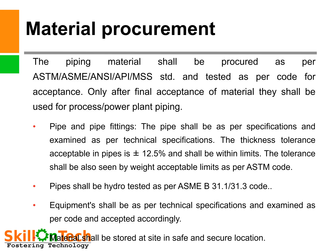Material procurement. For carrying out a pipeline project, material procurement is a very important activity. Therefore, we must know about material procurement and how material is to be procured. The piping material shall be procured as per ASTM, ASME, ANSI, API, and MSS standards and tested as per code for acceptance. Only after final acceptance of material, they shall be used for process and power plant piping.